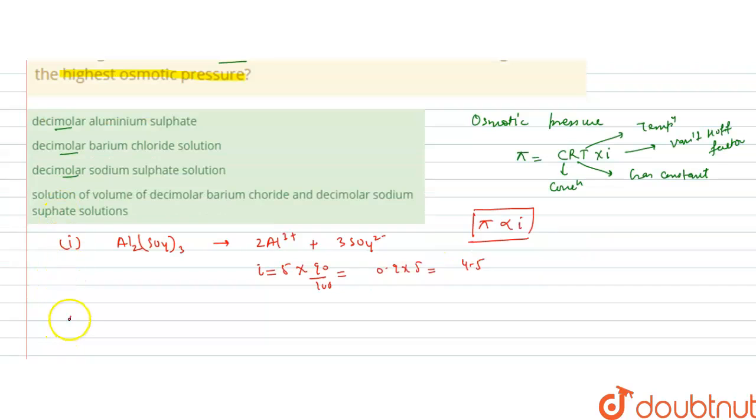Second is barium chloride solution, which dissociates into Ba²⁺ and 2 Cl⁻ ions. So I is 3. With 90% dissociation, I will be 3 times 0.9, which is 2.7.